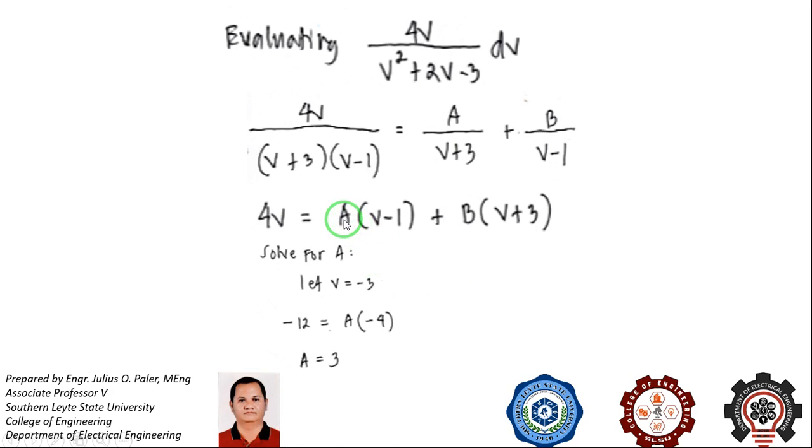Dividing the equation by the product of (v + 3) and (v - 1) gives us 4v = a(v - 1) + b(v + 3). First, we solve for coefficient a. In order to eliminate b, we let v = -3 so that v + 3 will be 0. Substituting v = -3, then 4v is -12 and (v - 1) is -4 times a. Therefore, a equals positive 3.